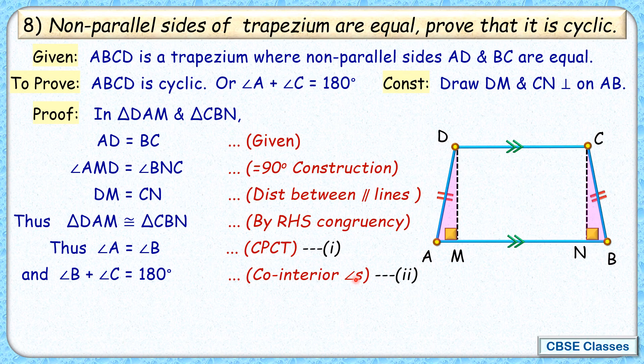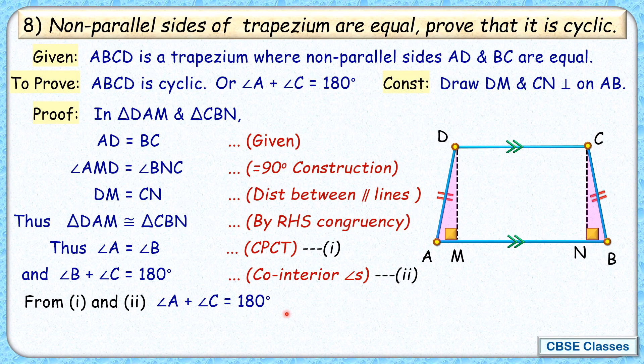Now from observation 1 and observation 2, angle A equals angle B, and angle B plus angle C equals 180 degrees. So here we replace B with A. What we get is angle A plus angle C equals 180 degrees.